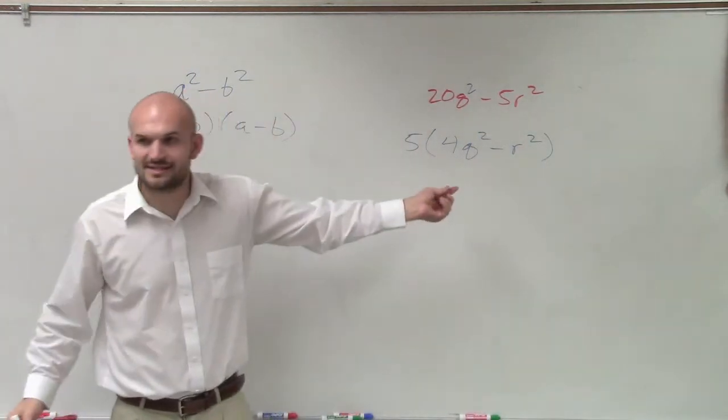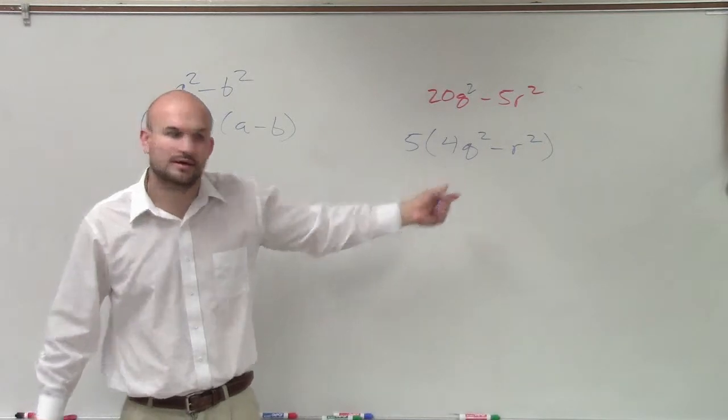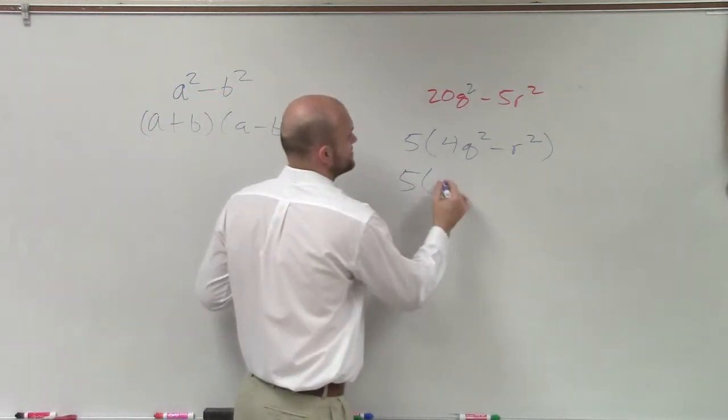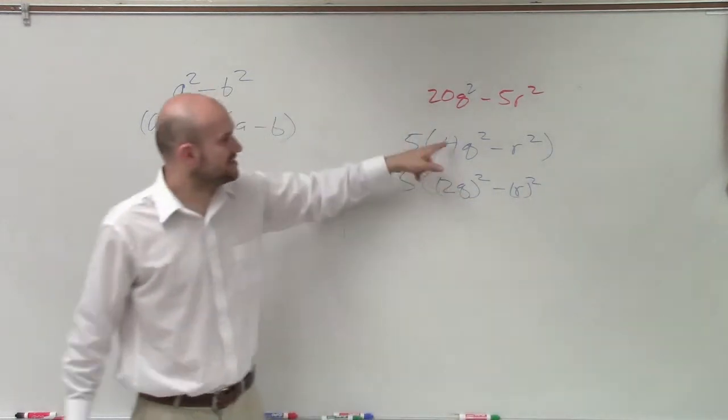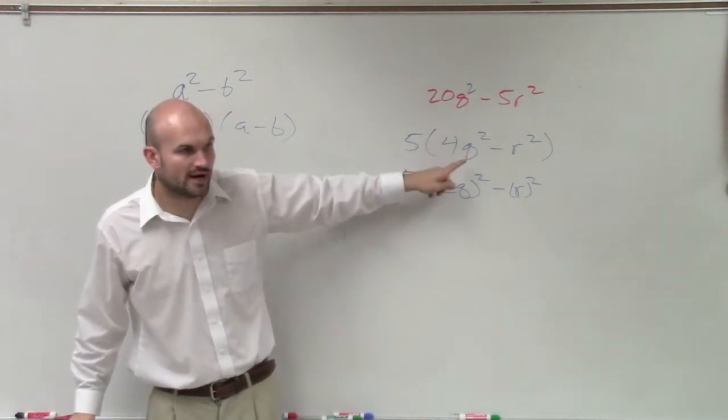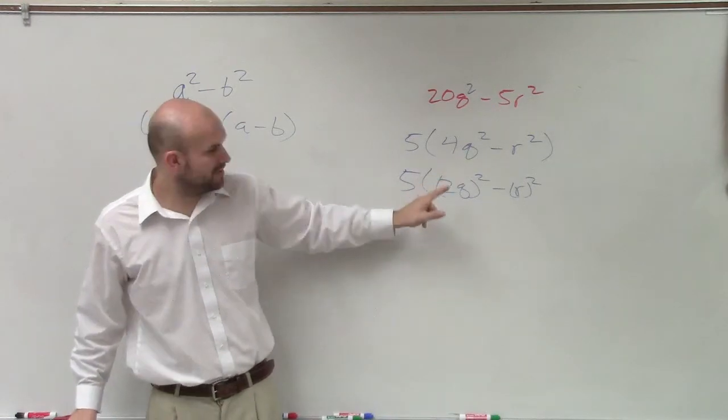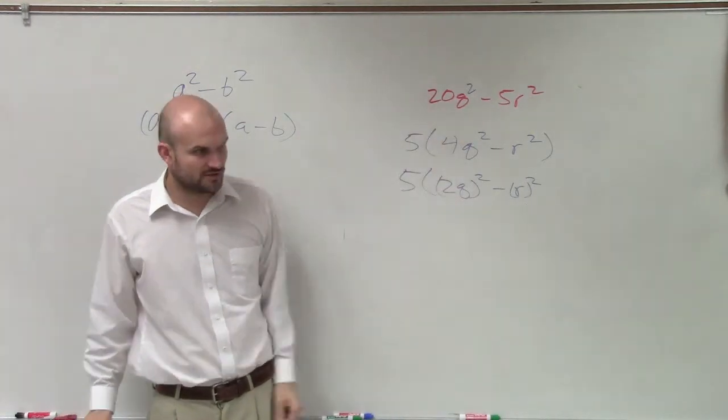Now, can I write this as a difference of two squares? Yes, I can write this as 5 times 2q squared minus r squared. Because 4, you can write as 2 squared, and then you can just put them in there. Because is 2q squared the same thing as 4q squared? Yes, it is.